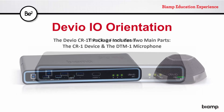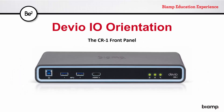Starting with the CR1 and its front panel, from left to right, the first three connections are all USB 3.0 ports. Next, we have the HDMI input. This connection is intended to pass video, most commonly from a computer. There are cases where you will want to use this and cases where you will not want to use it. We'll discuss those shortly.